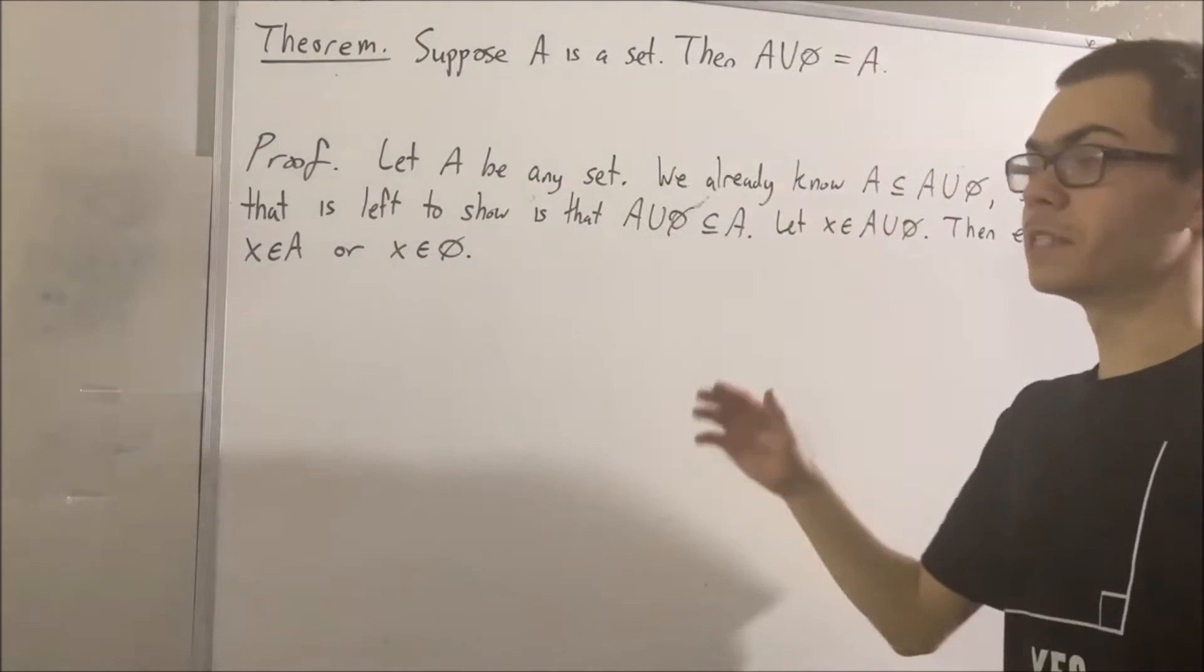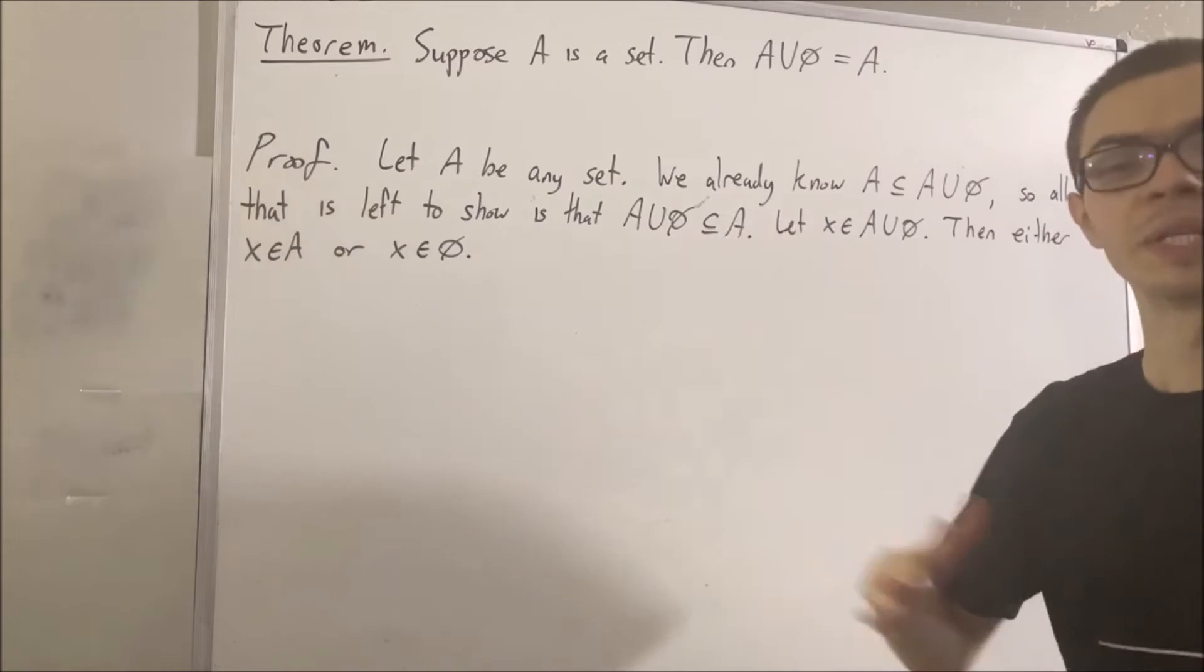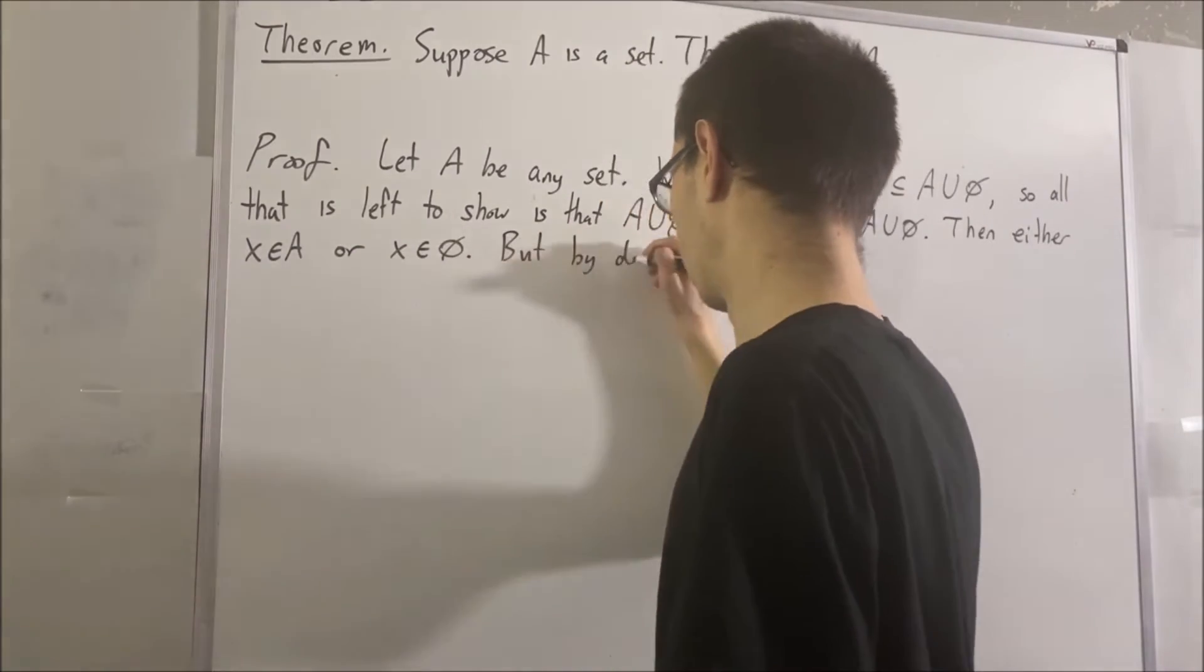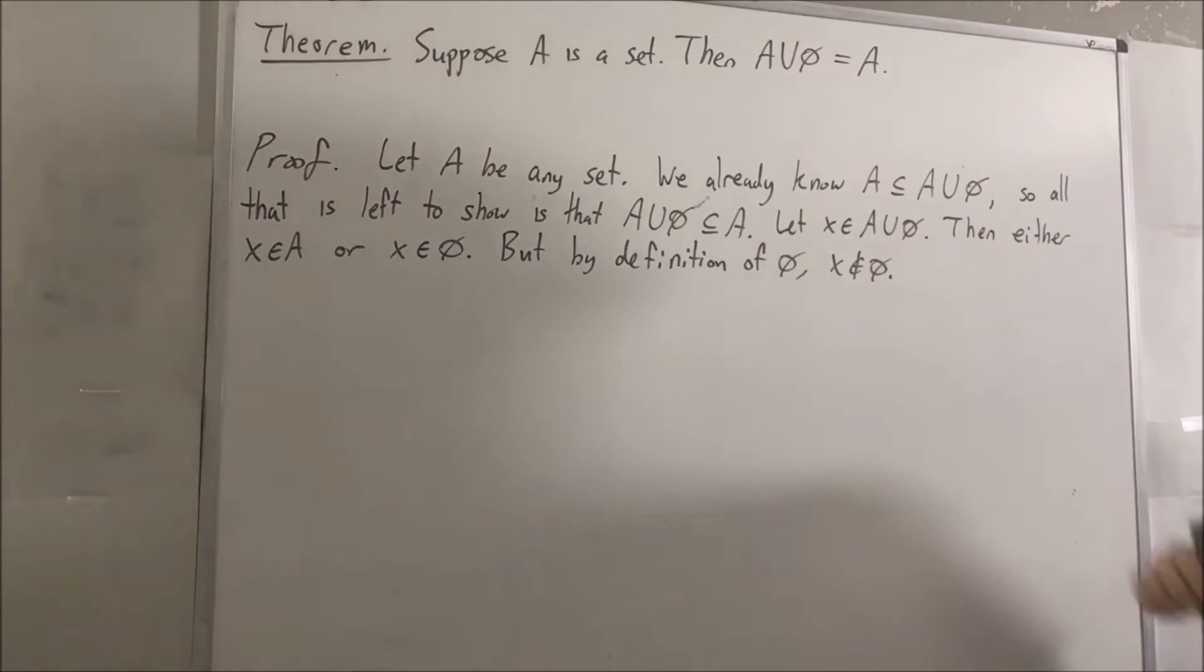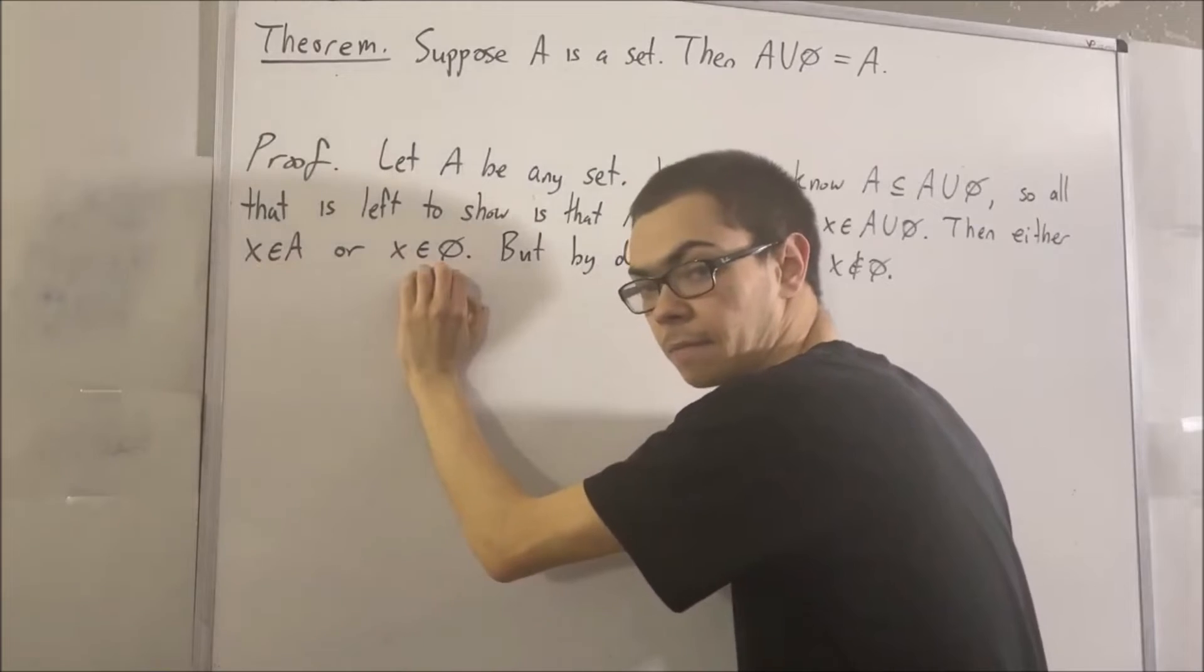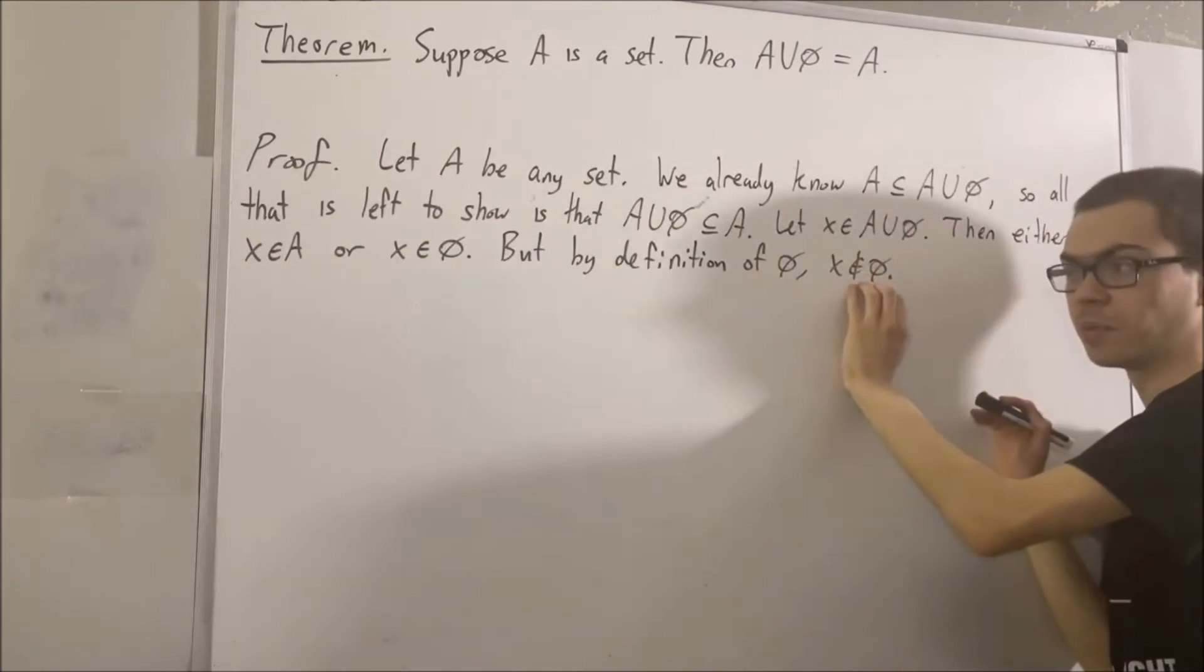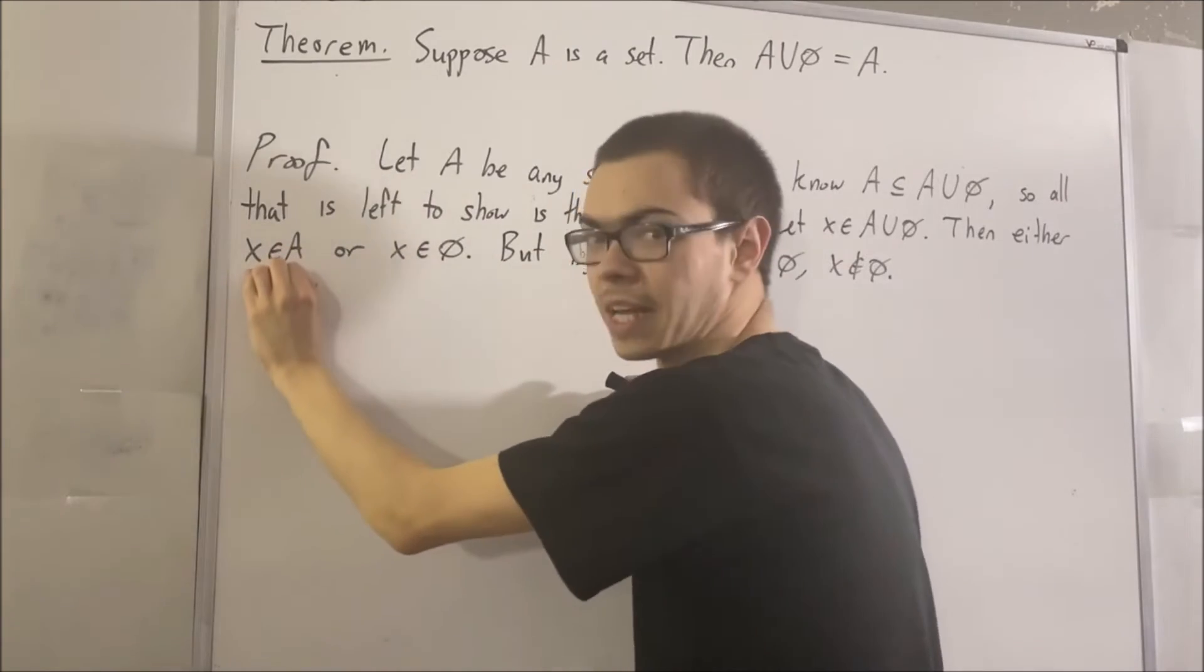But by definition of the empty set, X is not an element of the empty set because the empty set has no elements. So what do we have here? We have that either X is an element of A or X is an element of the empty set. But X is not an element of the empty set. So we must have this option. We must have that X is an element of A.